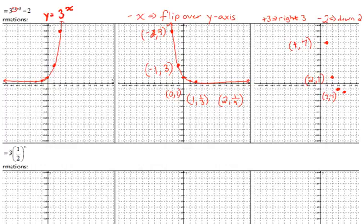The point (2, 1/9) moves right 3 to x equals 5, then down 2 puts us at almost negative 2, not quite. Connect the dots. Make sure you don't cross the line y equals negative 2, because originally we didn't cross 0, and since everything goes down 2, now we can't cross negative 2. Every characteristic of that graph shifts down 2.